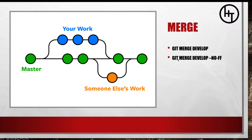If we just want to keep all three commits to be added at the end of master, we can do 'git merge develop'. But if we want to squash all three commits into a single commit, we can do 'git merge develop --no-ff'. I'll show both in action. The first keeps the full commit history; the second combines them into one commit.